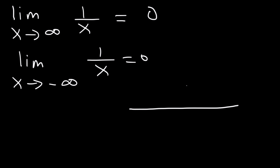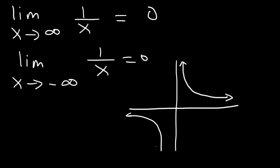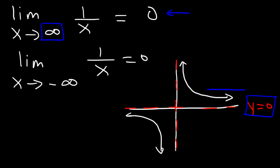Now let's graph this function. The graph of 1 over x looks like this. It has a vertical asymptote at x equals 0 and a horizontal asymptote at y equals 0. As x approaches positive infinity, you're going to get the horizontal asymptote, which is y equals 0. As we follow the curve all the way to the right, it's going to get closer and closer to 0.